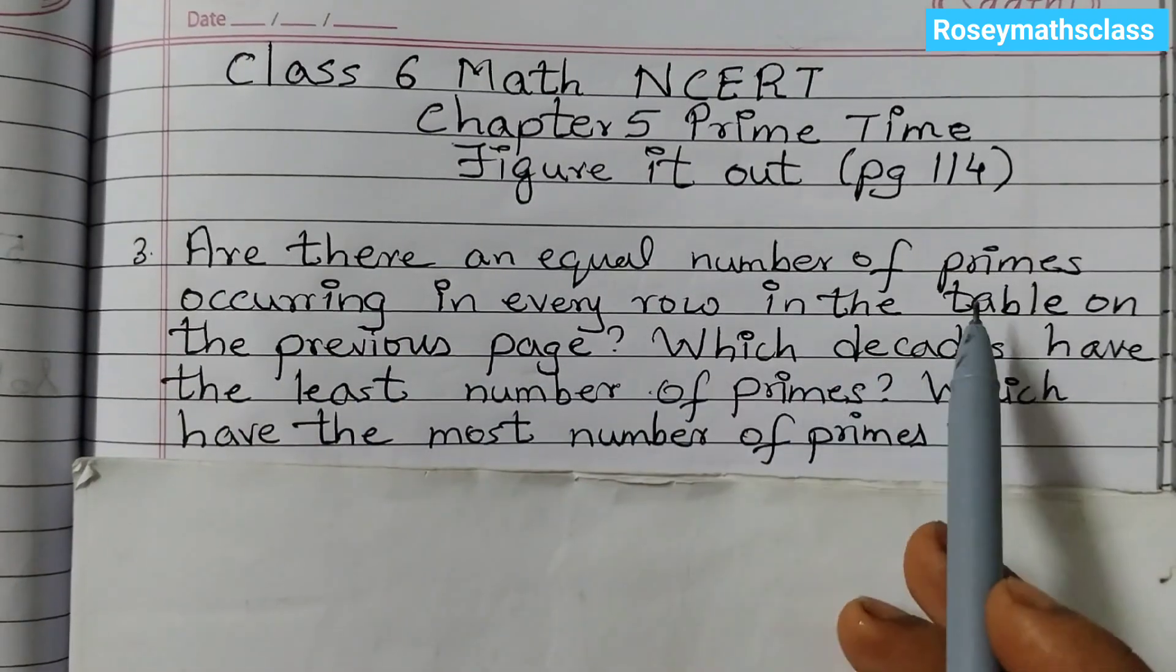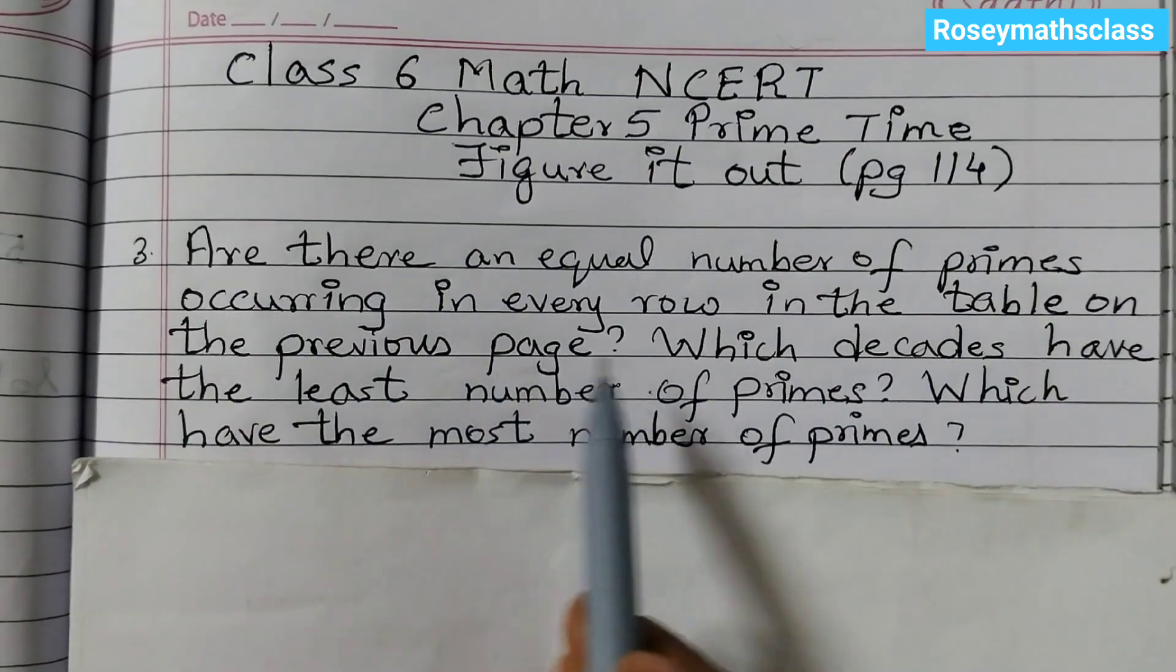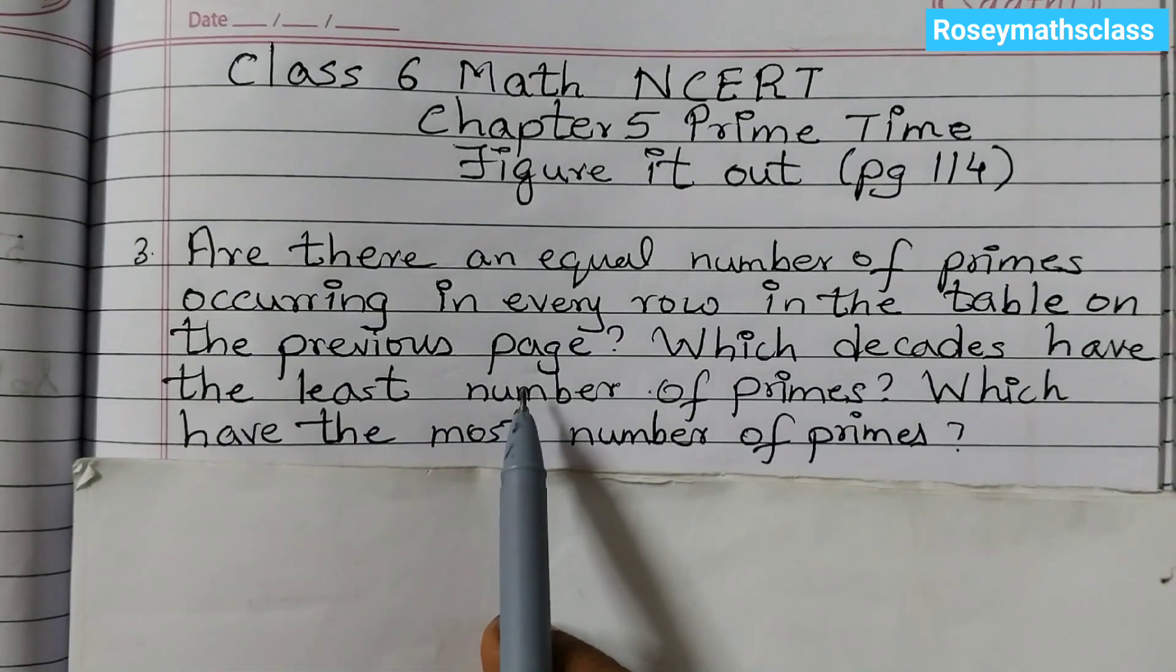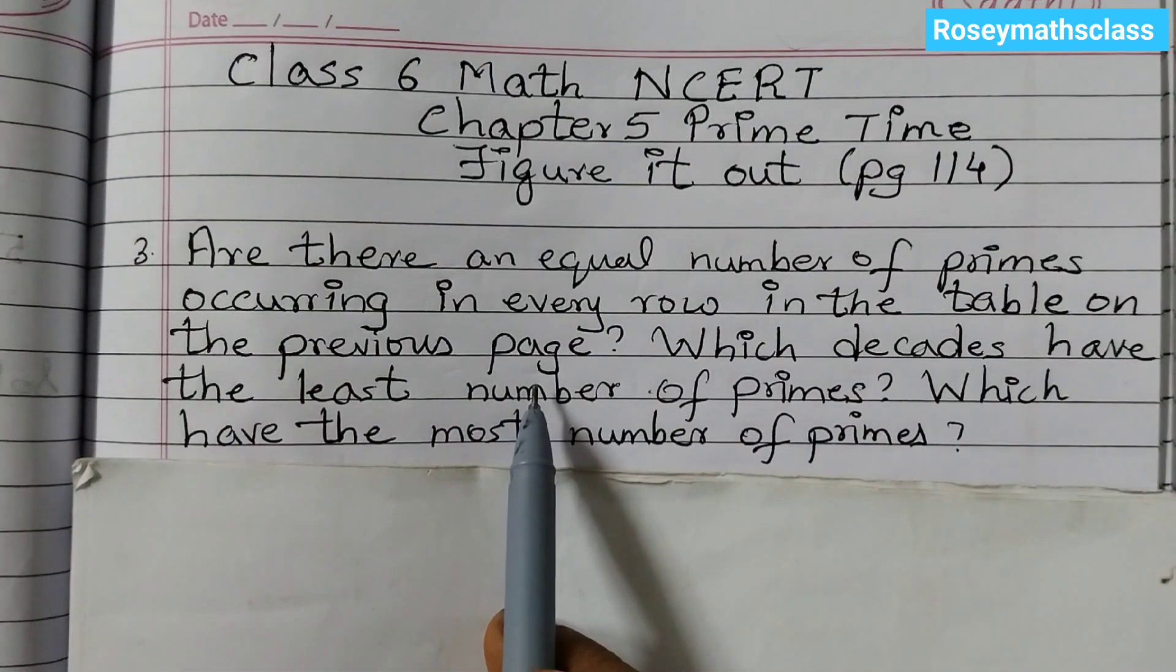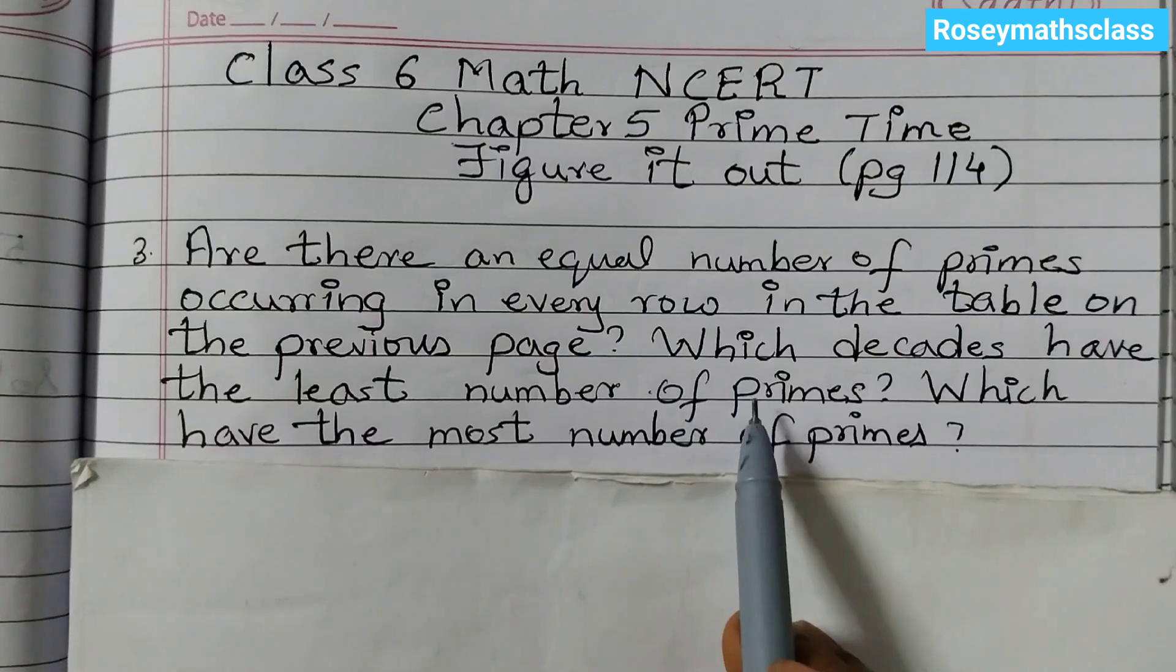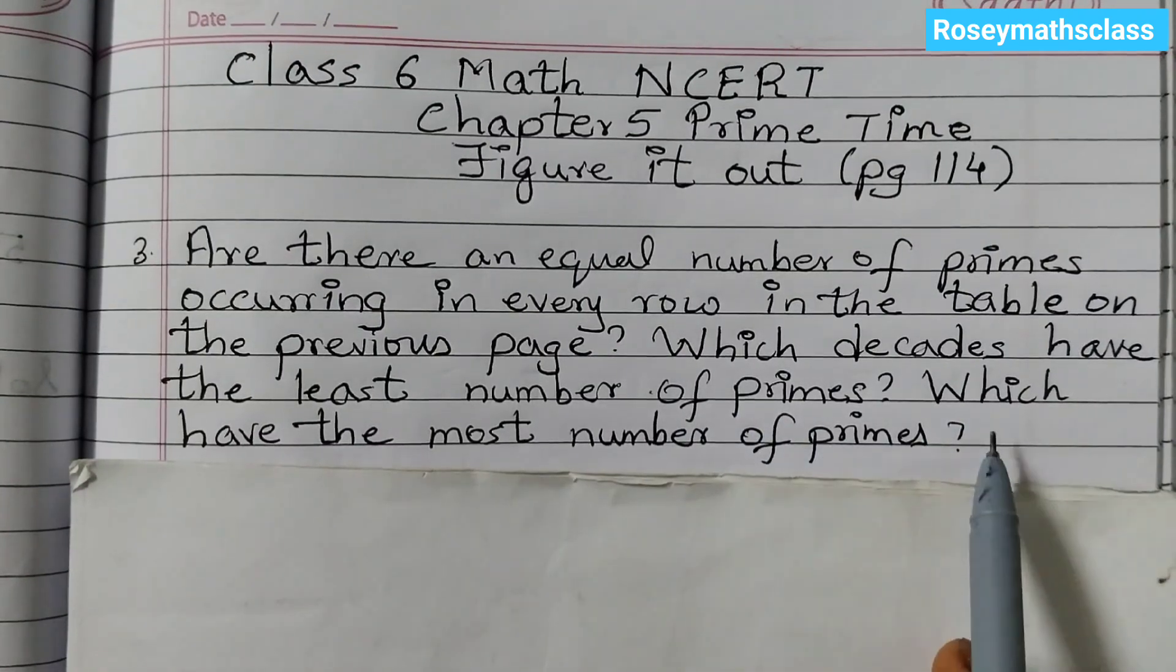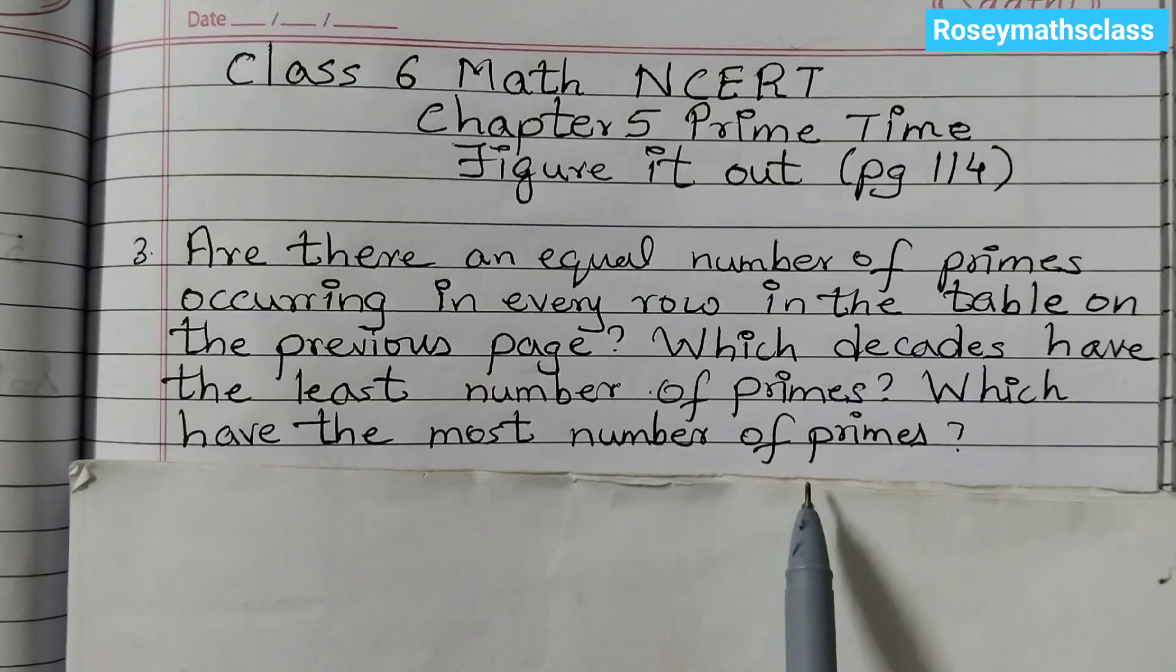Are there an equal number of primes occurring in every row in the table on the previous page? Here previous page refers to page number 113. Which decades have the least number of primes, which have the most number of primes?